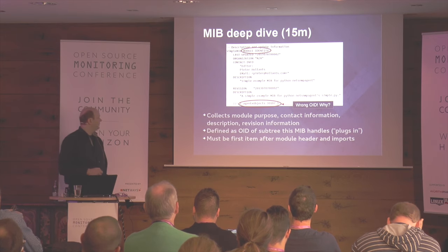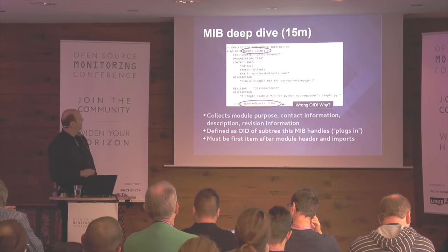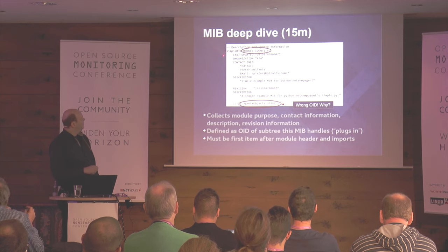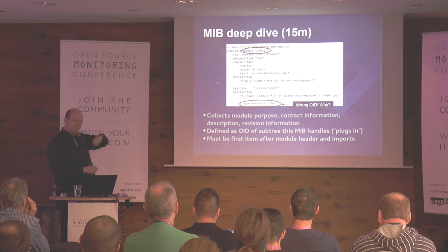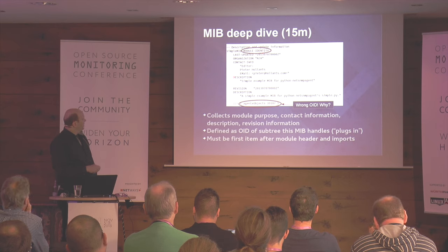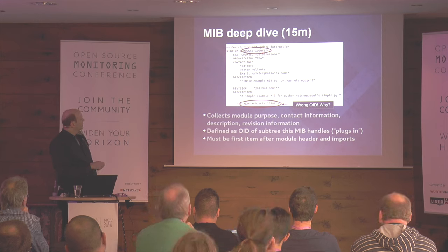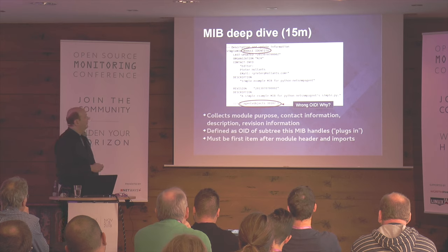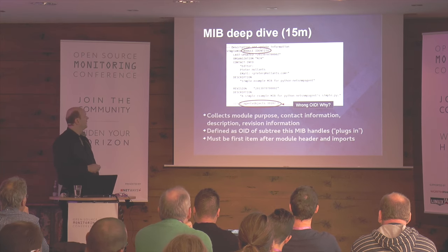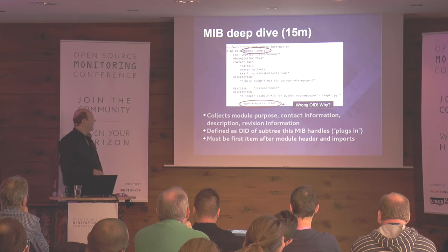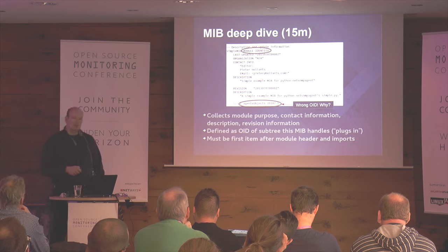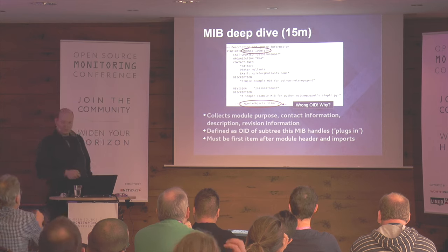Every MIB is required to have what is called a module-identity. Basically, you write the MIB name — notice it's lowercase here, so it's not the same as the module header. You say MODULE-IDENTITY, and then its parameters: when was this MIB file last updated, which is the organization, contact information, a description, and very important — revision information. All of this is not really relevant to the computer system, but it's for people reading your MIB.